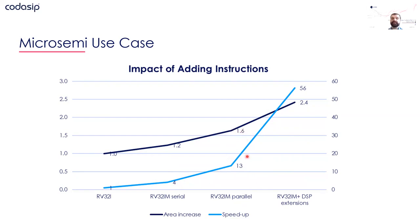What's really important is that we did one more step beyond standard extensions: we created a custom extension. We added a few DSP instructions, and ended up with more than 56x in terms of performance. The area increase was only about 2.4x compared to baseline — but compared to the performance gain, that's huge. This also allowed them to use older technology nodes, saving money. So there are benefits beyond just performance and power.